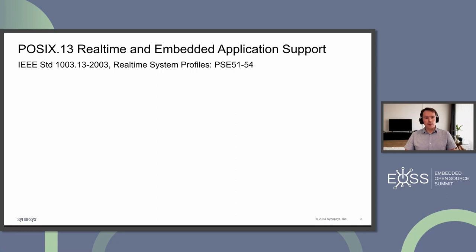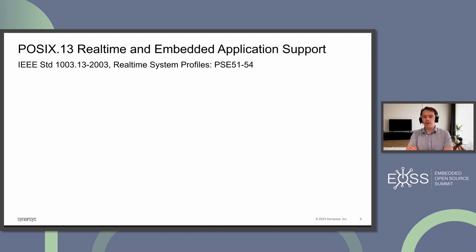Speaking about real-time and embedded application support — that's the IEEE 1003.13 standard, and its latest version was published in 2003. This specifies something called real-time system profiles, from PSE 51 to PSE 54. The POSIX standard is huge and was initially developed for big Unix workstations, so not everything is applicable to embedded systems. With that in mind, a subset of POSIX.1 was created called POSIX.13, which exactly tries to cater to embedded application support.